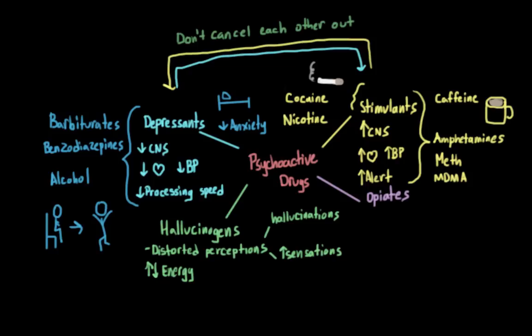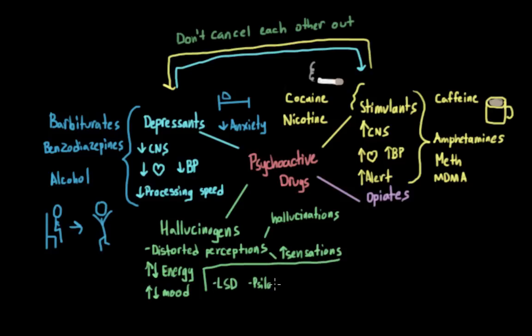Those perceptual changes can include a ton of different things in addition to hallucinations — emotional responses, feelings of connectedness, but also intense mood swings and moods that change very rapidly. Interestingly, the exact experiences felt by the individual can differ depending on their personality, where they are, or who they are with. This class of drugs includes things like LSD, which is sometimes referred to as acid, psilocybin, which is an active ingredient in mushrooms, and also things like peyote and PCP.